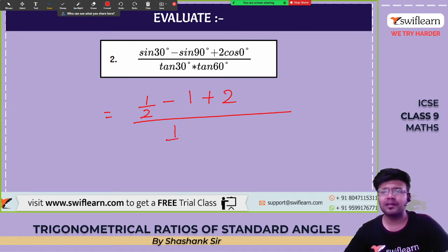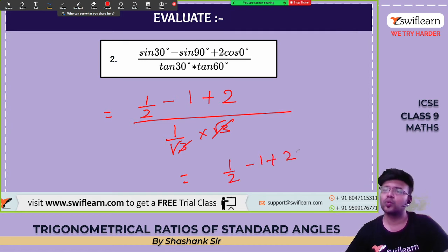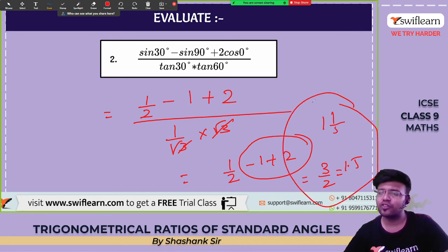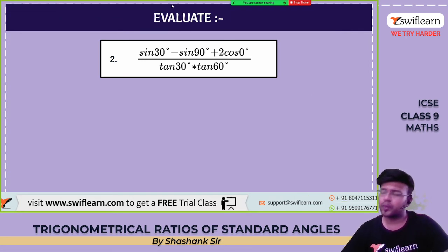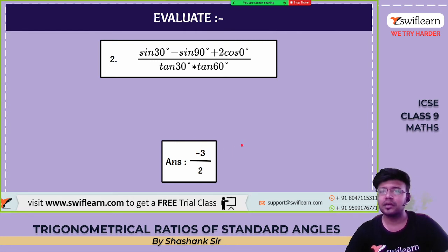Continuing the calculation: 2 × 1 = 2. Tan 30° = 1/√3 and tan 60° = √3; these cancel giving 1/1. We are left with 1/2 − 1 + 2. Minus 1 plus 2 is 1, so the answer is 3/2, or 1.5. All three forms are the same value.